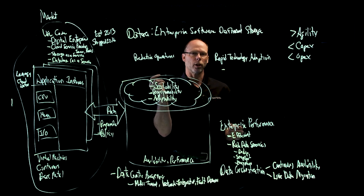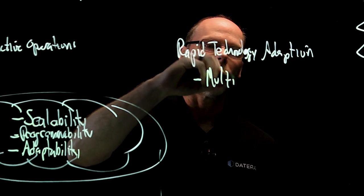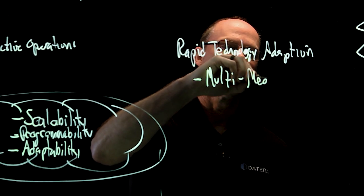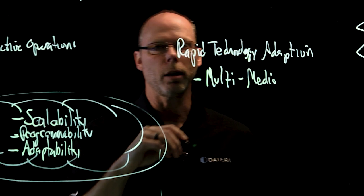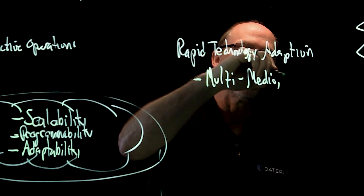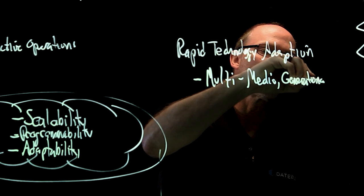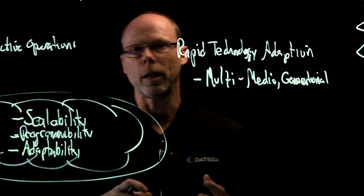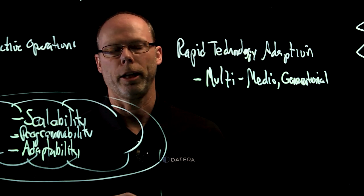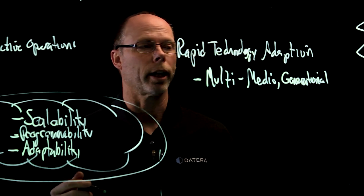Now I'd like to talk about rapid technology adoption. Our system is designed to be multimedia, so whether it be NVMe, SATA flash, or hard drives, it's meant to be multi-generational. I can use different generation servers. For example, an HPE DL380 Gen 9, an HPE DL380 Gen 10, or in the future I can adopt new generations.